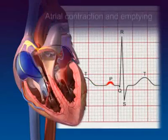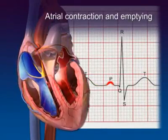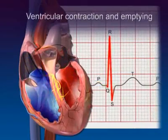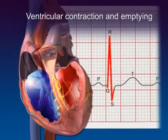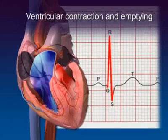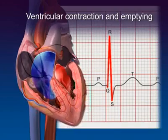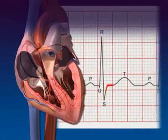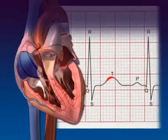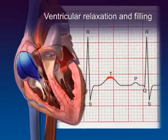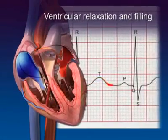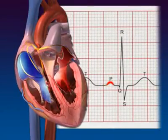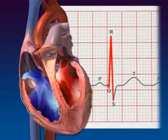The P wave initiates atrial contraction, which completes ventricular filling. The QRS complex initiates ventricular contraction, which pumps blood out of the heart. During this time, the atria repolarize and relax. The T wave initiates ventricular relaxation, during which the ventricles fill once again. One cardiac cycle is complete.